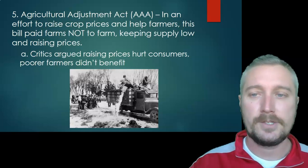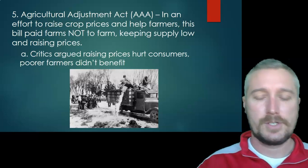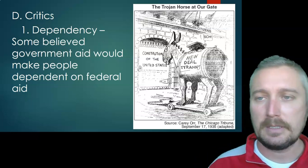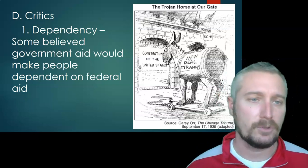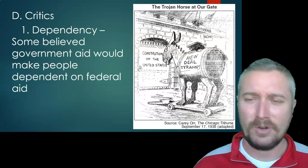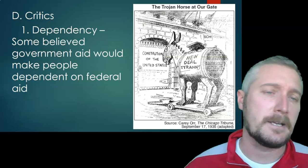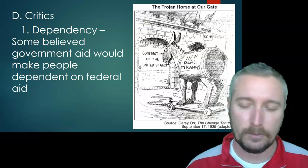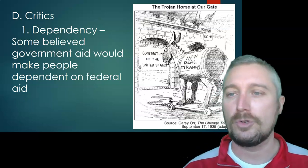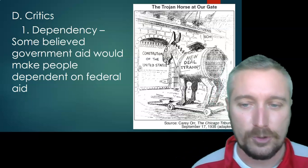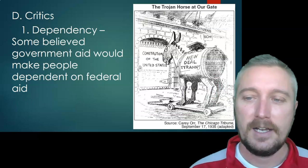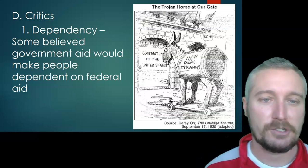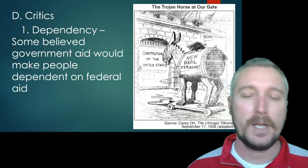Even with all this, FDR would remain popular mainly because at least he was doing something — at least he was trying, whereas we just came from Hoover who frankly did hardly anything. I want to spend a little bit of time talking about the critics of FDR and the New Deal. This was a great period for political cartoons. You can see here the title of this cartoon, 'The Trojan Horse at Our Gate,' with American citizens guarding the Constitution. This artist is suggesting that FDR's New Deal is the tyranny that's going to bust down the Constitution. Some people felt like that for various reasons.